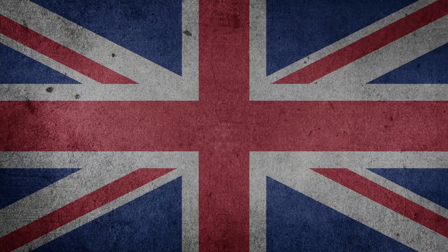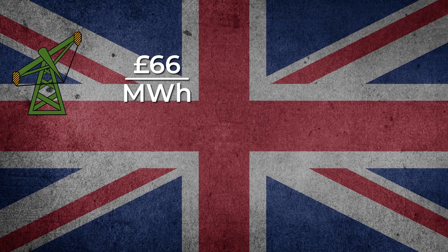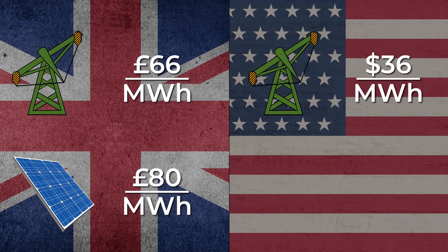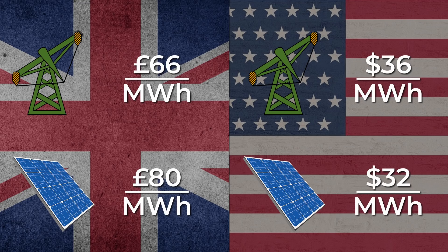In the UK, natural gas is the cheapest fossil fuel source and has a levelized cost of £66 per megawatt hour, whereas solar cells have a cost of £80 per megawatt hour. However, in the US these costs are $36 per megawatt hour and $32 per megawatt hour respectively, which is very promising.